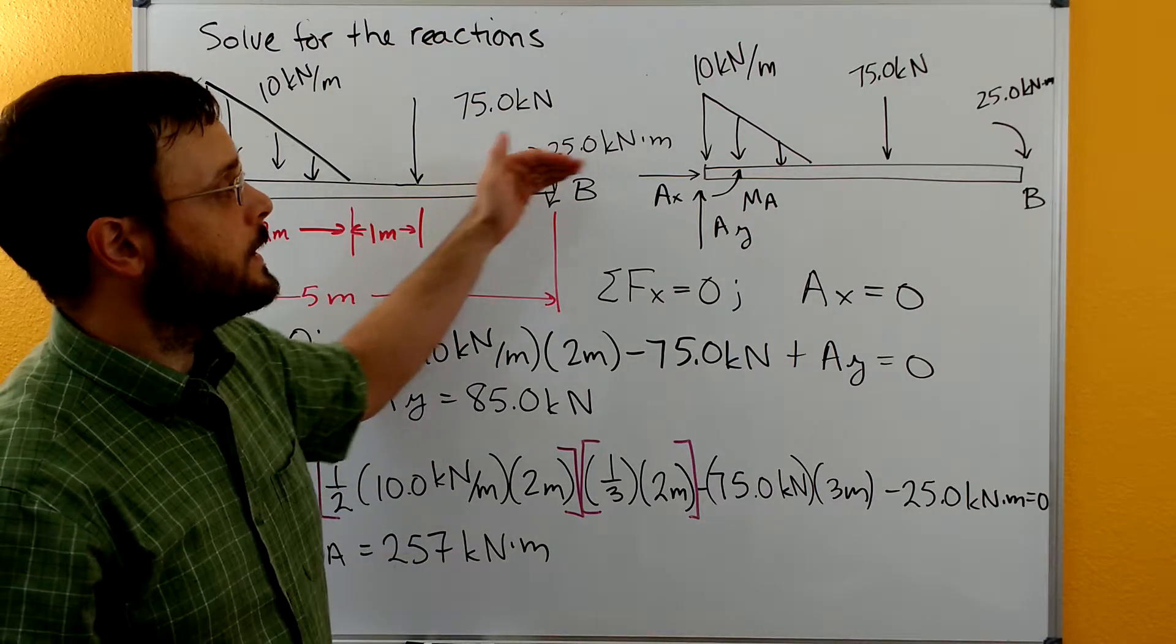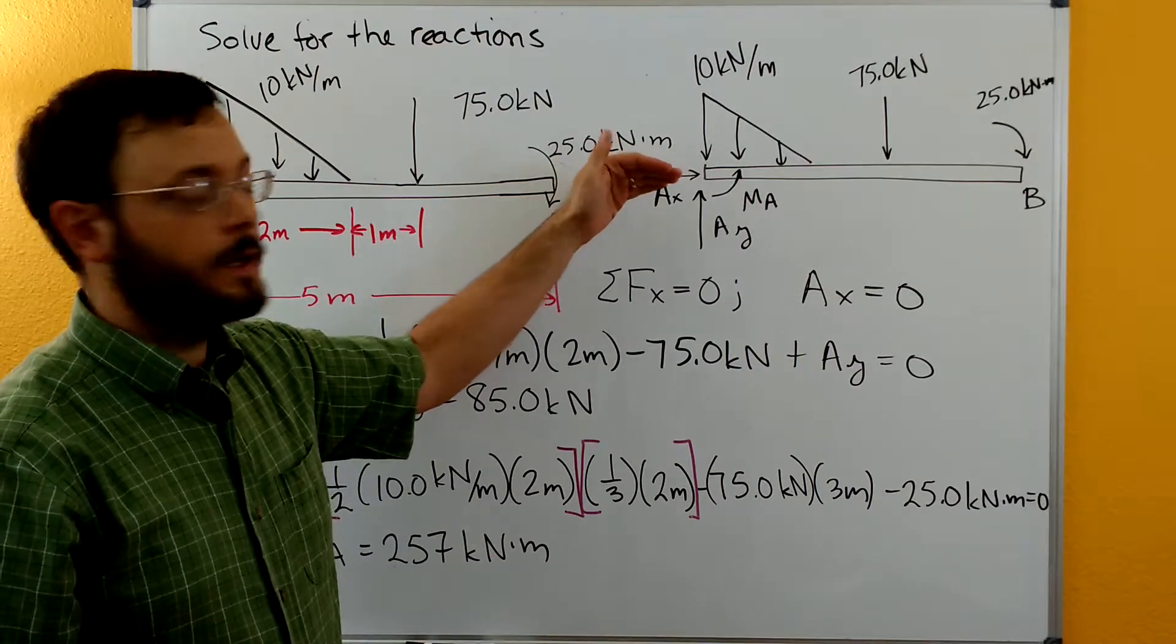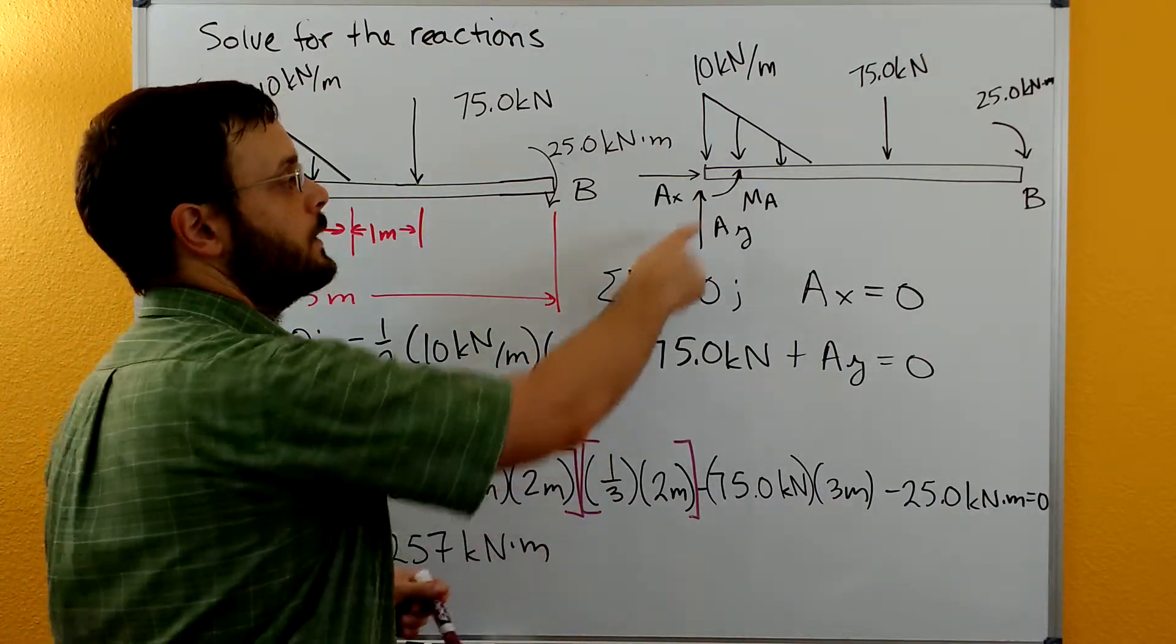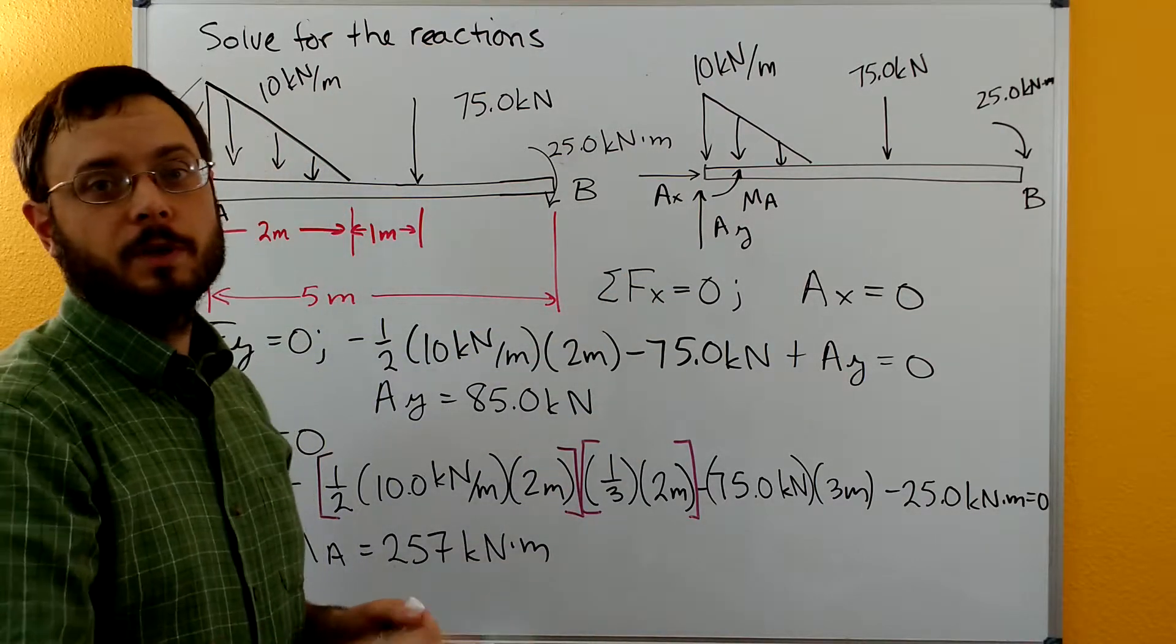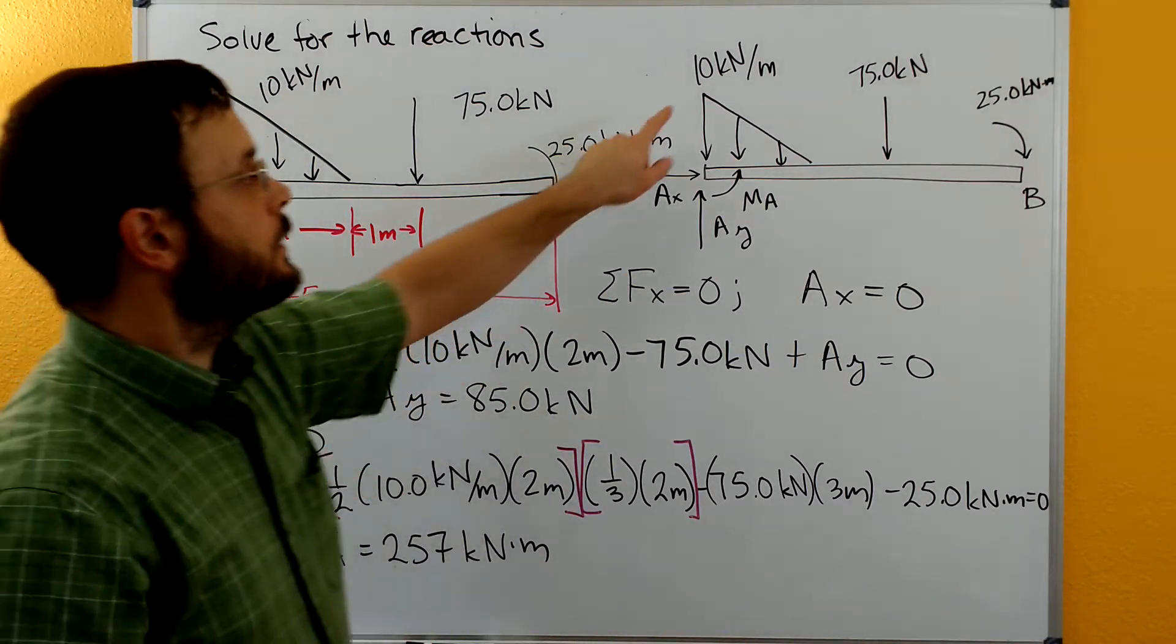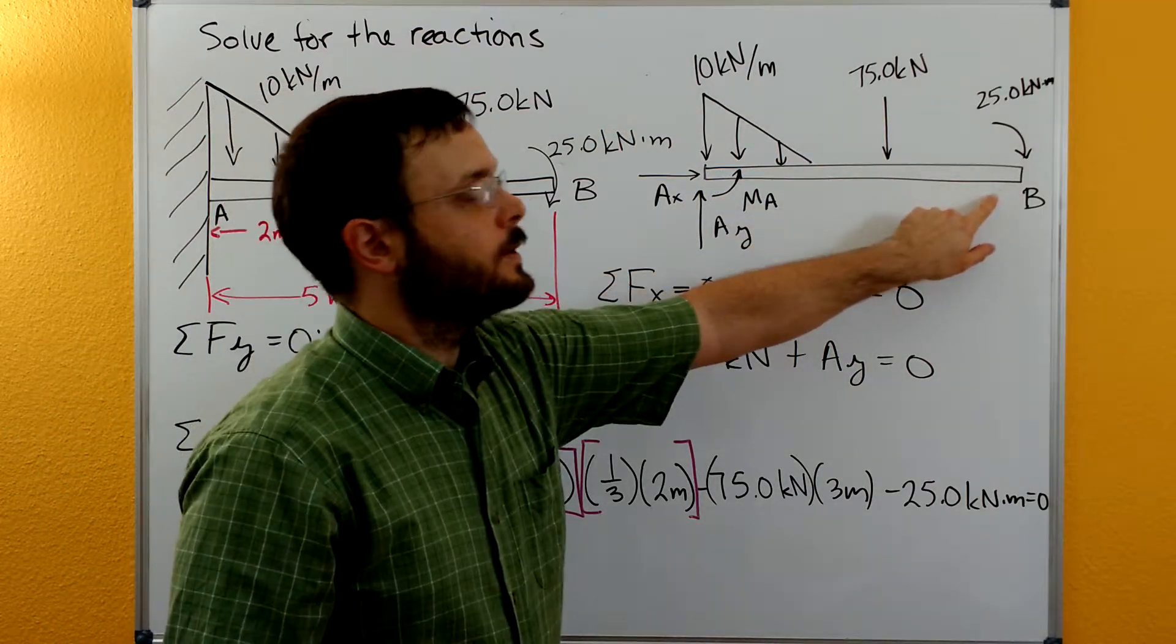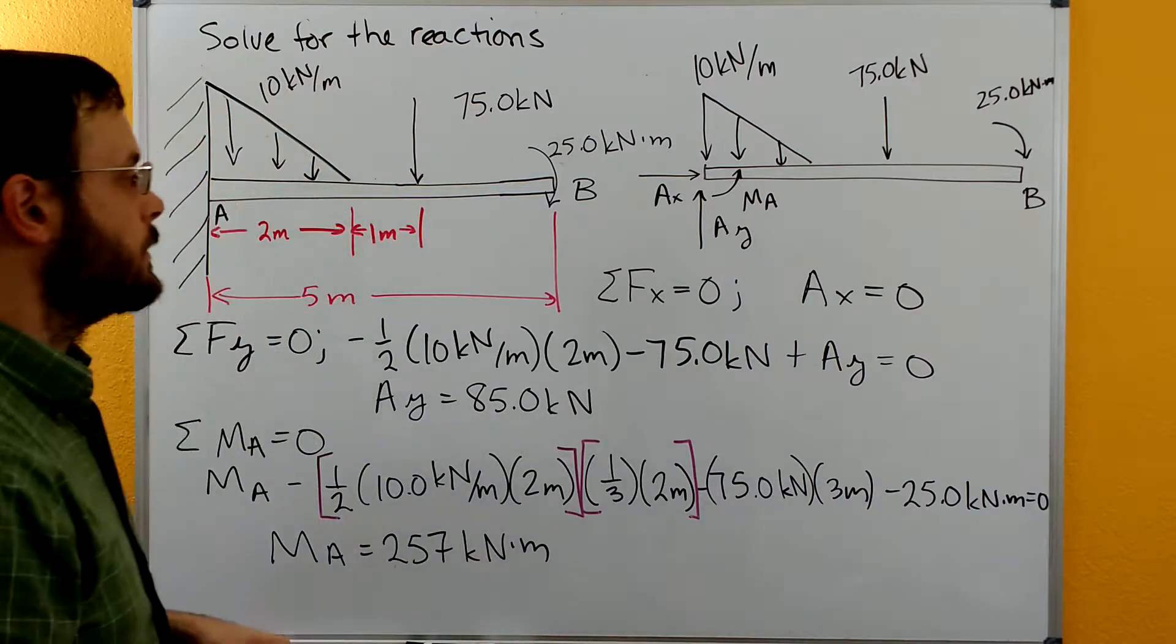So its reactions are going to be the AX force to prevent the X translation, the AY force to prevent the Y translation, and then the moment at A to prevent rotation around point A. Then we include our distributed load, our concentrated force here, and then also our couple moment at the very end of the beam.